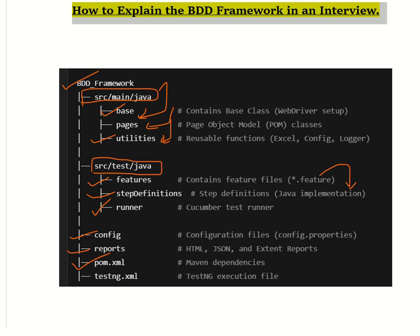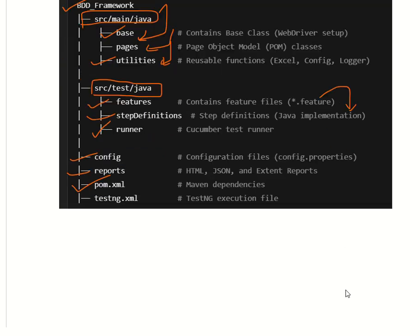The pom.xml is a Maven configuration file where dependencies for Selenium, Cucumber, and REST Assured are defined. The testng.xml file contains dependency and execution configurations like parallel execution and parameterization. In this way, we explain each component one by one in the interview.